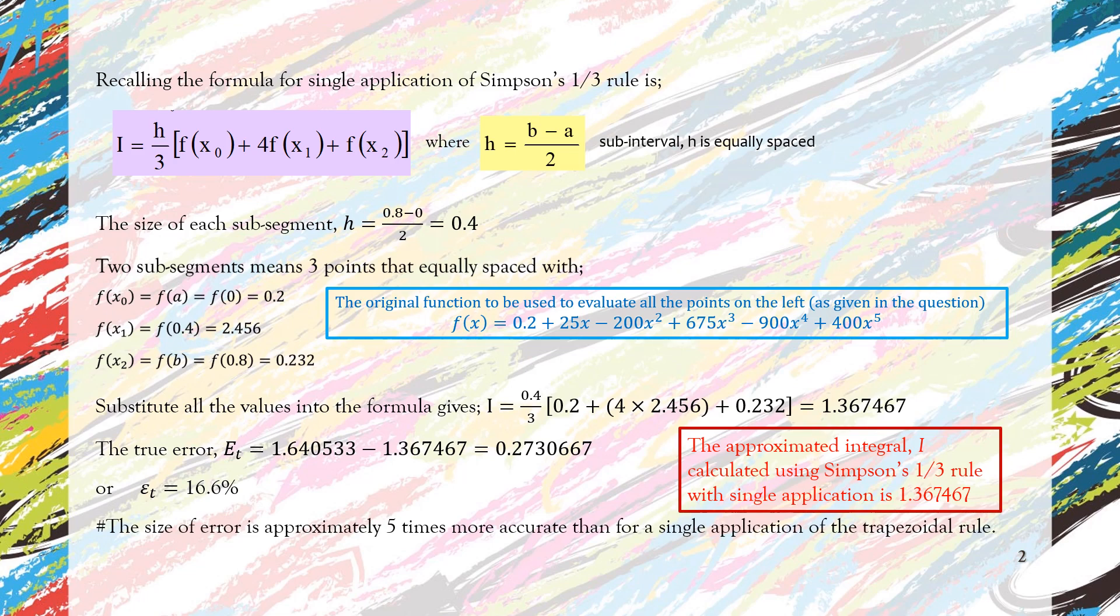The error is approximately five times smaller. We can generally conclude that for this particular problem, Simpson's one-third rule accuracy is five times higher than the trapezoidal rule when using single application.